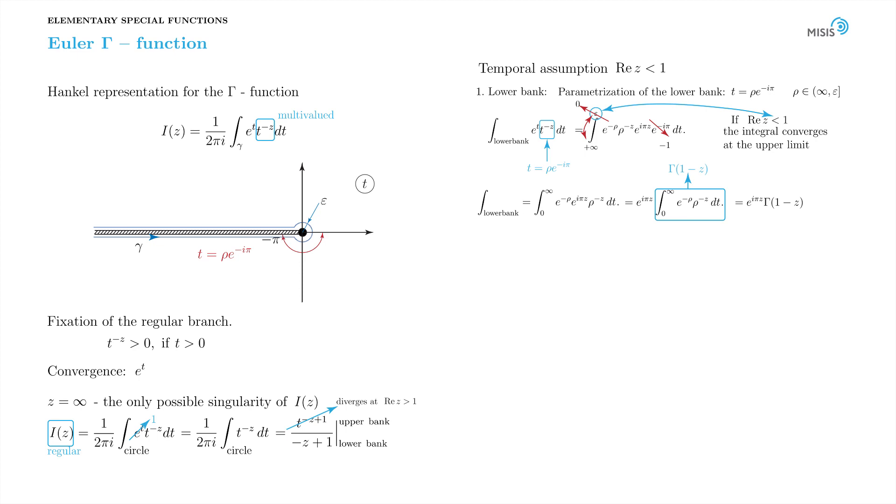In the same spirit, we compute the integral along the upper bank of the branch cut. The only difference is going to be the change of the argument of the complex number t. It used to be negative pi, and it will become pi. The parameterization of the contour will be simply t equals rho times e to i pi. The rho parameter this time will change from epsilon to plus infinity.